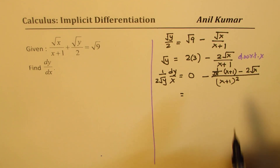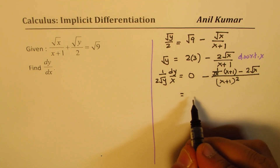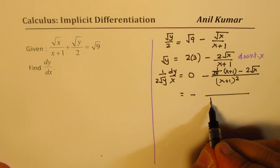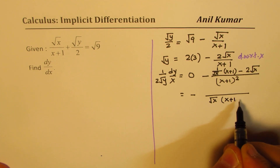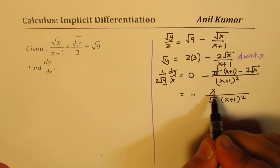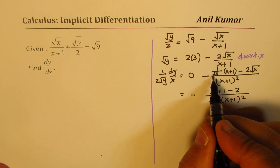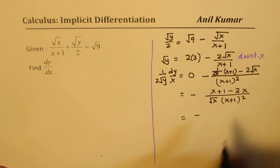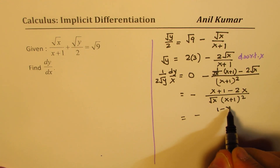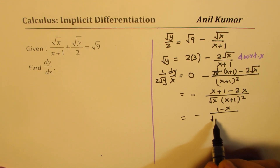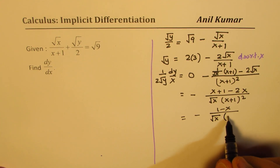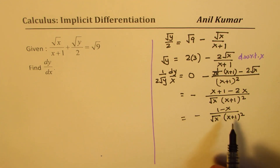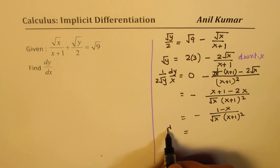We can simplify this by taking square root of x common. Writing square root of x in the denominator over (x plus 1) squared, we get (x plus 1) minus 2 square root x times square root x — which is x — giving minus (1 minus x) over square root of x times (x plus 1) squared.